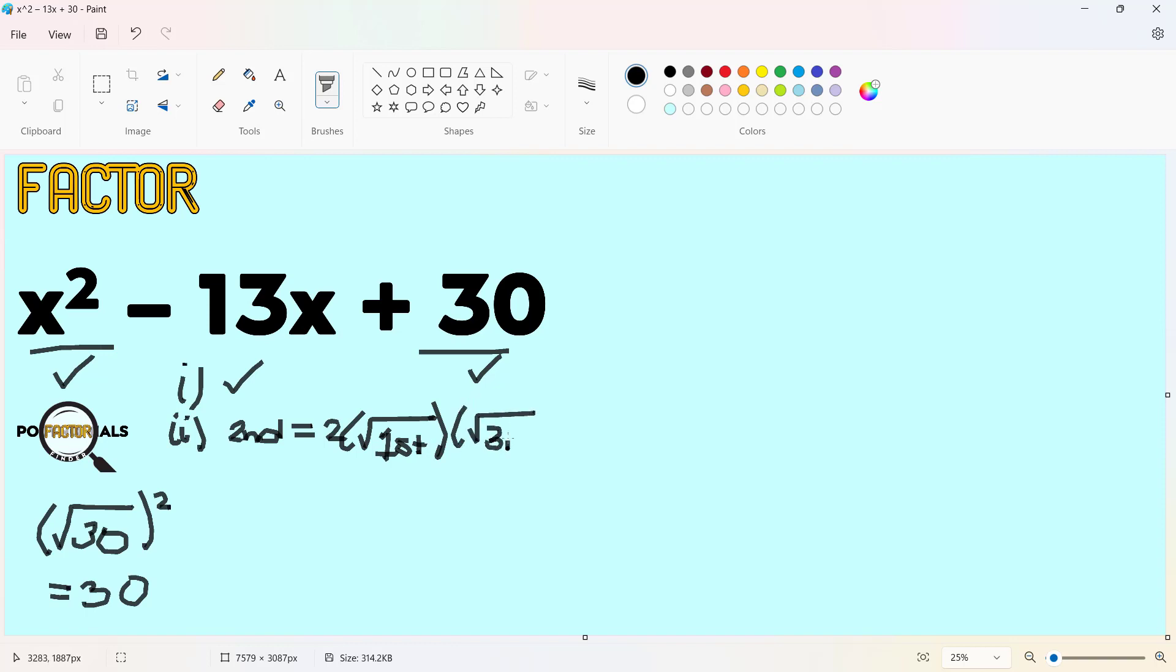Now, even if we consider 30 as a perfect square, if this is not true, then definitely we proceed with another method. So, our second term is negative 13x. Is this equal to this?